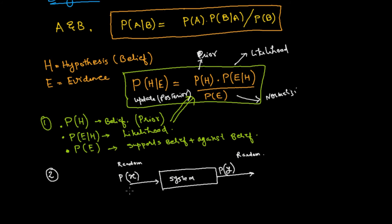Now, how do I relate the Bayesian equation to this system? The input is X and the output is Y. The probability of Y is not completely independent — it depends on what I am transmitting. If I change the input, the output also changes, so they are dependent. Therefore I can write the distribution as the probability of Y given X.